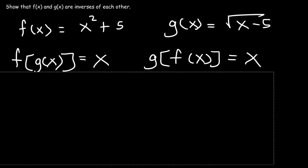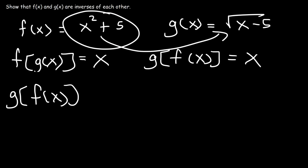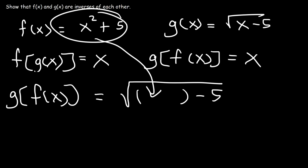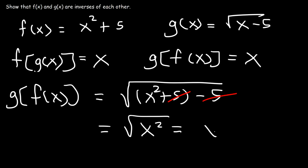Now what about g(f(x))? We take f and insert it into g. G is √(x − 5), and we substitute f(x) = x² + 5 for x, giving √(x² + 5 − 5). Since 5 − 5 = 0, we're left with √(x²), which equals x. So therefore these two functions are inverses of each other.